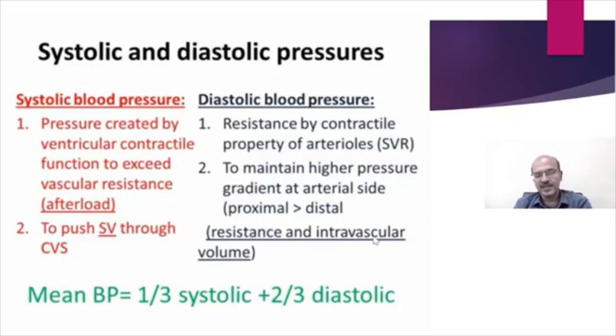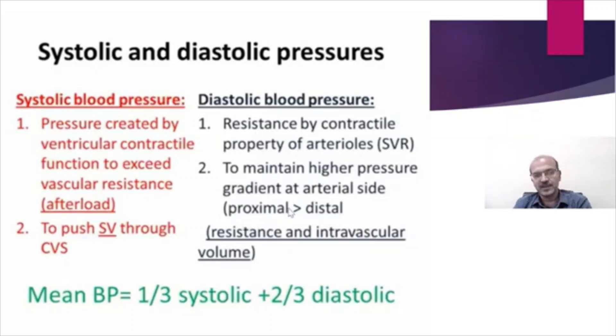If you are hypovolemic, it is very difficult to maintain your diastolic pressure. In a shunting lesion like a PDA, for example, the resistance drops and you may have a wide pulse pressure because diastolic runoff occurs.